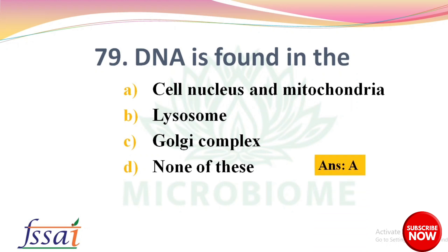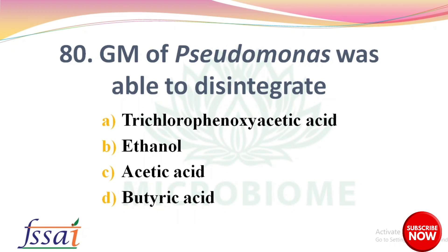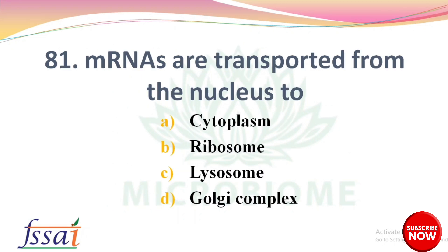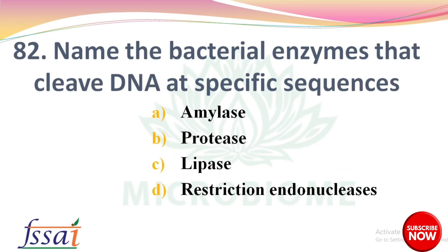DNA is found in — options: cell nucleus and mitochondria, lysosome, Golgi complex, none of these. The right answer: option A, cell nucleus and mitochondria. Next: a genetically modified organism of Pseudomonas was able to disintegrate — options: trichlorophenoxyacetic acid, ethanol, acetic acid, butyric acid. The right answer: option A, trichlorophenoxyacetic acid. Next: mRNAs are transported from the nucleus to — options: cytoplasm, ribosome, lysosome, Golgi complex. The right answer: option A, cytoplasm. Next: name the bacterial enzymes that cleave DNA at specific sequences — options: amylase, protease, lipase, restriction endonuclease. The right answer: option D, restriction endonucleases.